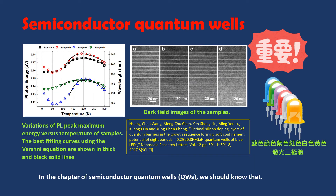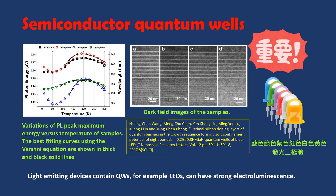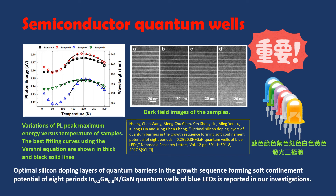In the chapter of Semiconductor Quantum Wells (QWs), we should know that QWs are effective nanostructures for confining electrons and holes. Light-emitting devices contain QWs; for example, LEDs can have strong electroluminescence. Optimal silicon doping layers of quantum barriers in the growth sequence, forming soft confinement potential of InGaN/GaN quantum wells for blue LEDs, is reported in our investigations.